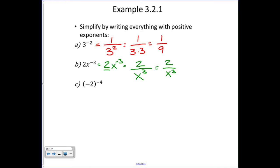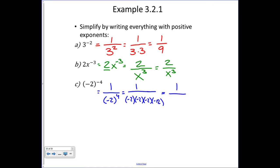Finally, negative two to the minus four. We rewrite that as one over negative two to the positive four — we move it to the opposite side of the fraction bar and the exponent becomes positive. Multiplying negative two by itself four times gives us one over positive sixteen.